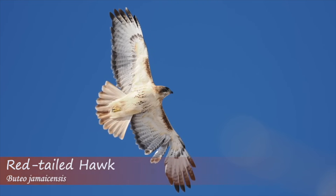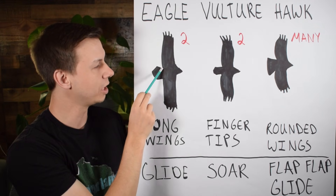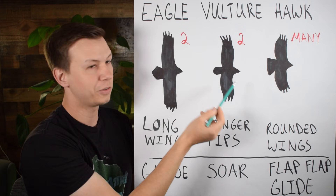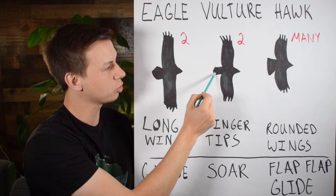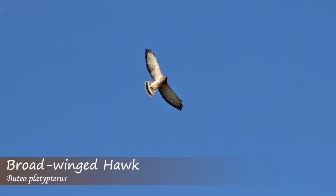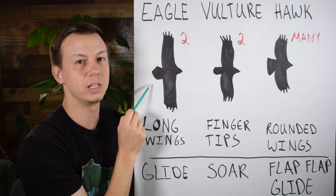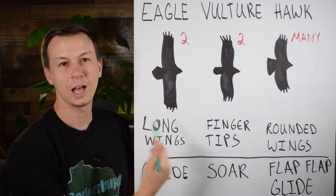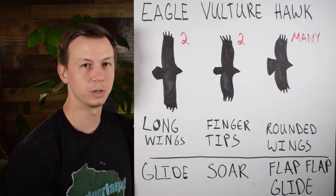Looking at the tail, a bald eagle is going to have a very wedge-shaped, large tail. The turkey vulture's tail is going to be kind of straight back, and the hawk is going to have a more rounded tail compared to these others. And of course, the eagle's features are the largest — eagles are very large birds overall.